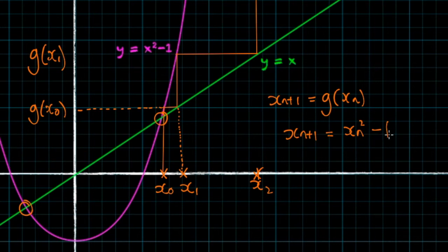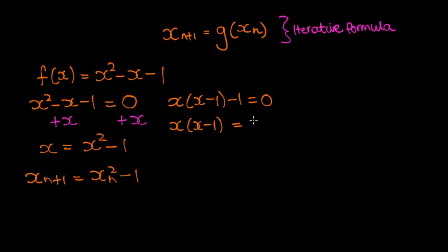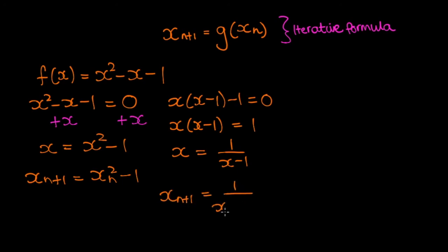Let's get back to the drawing board. You may have noticed there are multiple ways of rearranging for x. Instead of adding x to both sides, let's factorize x from the first two terms: x(x - 1) - 1 = 0. Adding 1 to both sides: x(x - 1) = 1. Dividing both sides by (x - 1): x = 1/(x - 1). So g(x) = 1/(x - 1), and our iterative formula is x_{n+1} = 1/(x_n - 1).